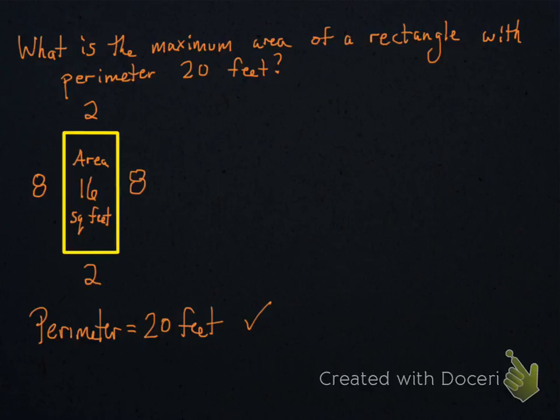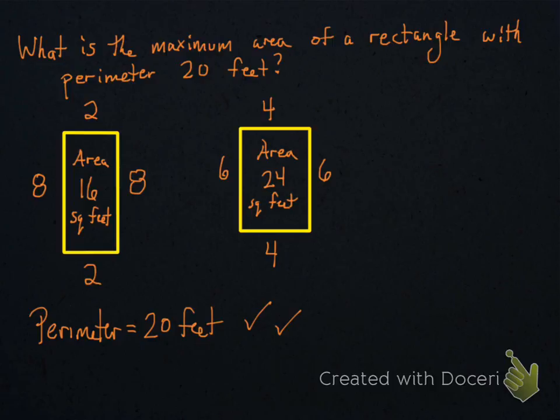So, there's an example of a rectangle with perimeter 20 feet and its area turns out to be 16 square feet. Here's another example, a 6 by 4. The area is 24 square feet, even though the perimeter is still 20 feet. So, different area. This one actually has a bigger area.